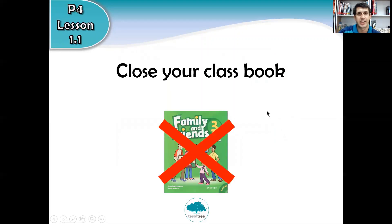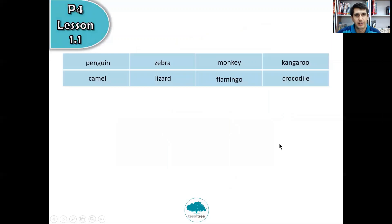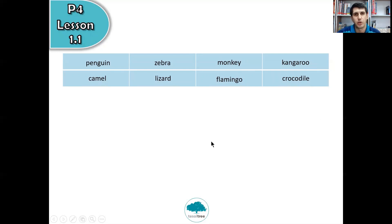Now let's see, can you remember all those animals? I want you to close your class book. Close your book and see what you can remember. We have eight animals: penguin, zebra, monkey, kangaroo, camel, lizard, flamingo, crocodile.